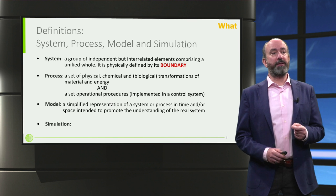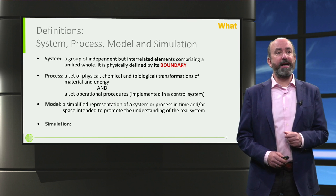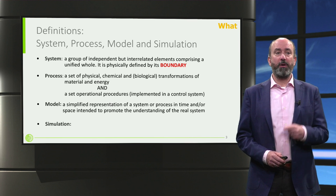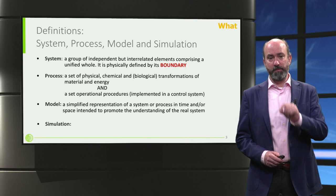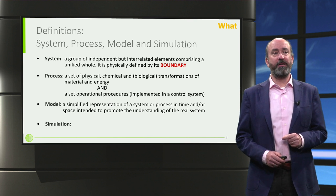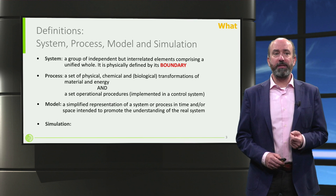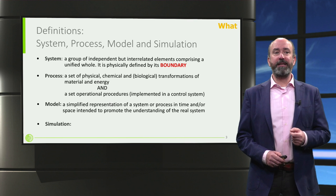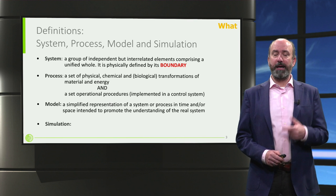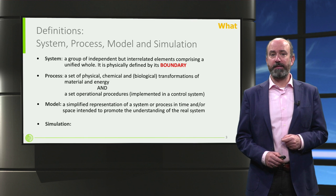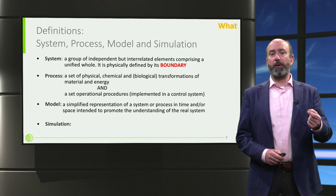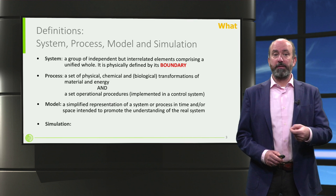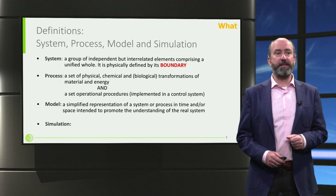What is a model? A model is a simplified representation of a system or process in time and/or space — we will see that in detail later — intended to promote the understanding of the real system. For instance, we develop the model of an aero engine to design it, to understand how it works, and to improve its performance.